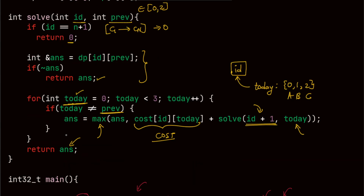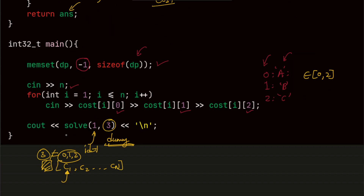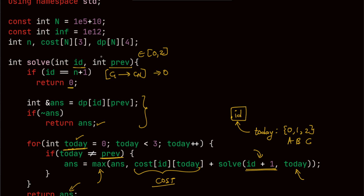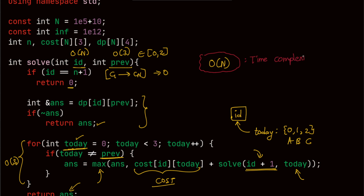The time complexity of this approach is O(N * 3 * 3) = O(N), since the number of unique values for id is O(N), the previous activity state takes only 3 possible values, and the iteration over choices is also constant order 3. That's it for this video — if you found this useful or have any doubts or suggestions, let me know in the comments. Thank you.